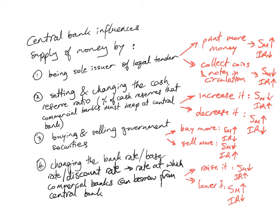The central bank influences the supply of money in several ways. First, it is the sole issuer of legal tender — only the central bank has the legal power to print notes and coins. This method is more old-fashioned and central banks don't typically do this anymore, but in the past, printing more money would increase the money supply and lower interest rates, while collecting notes and coins in circulation would decrease the money supply and raise interest rates.